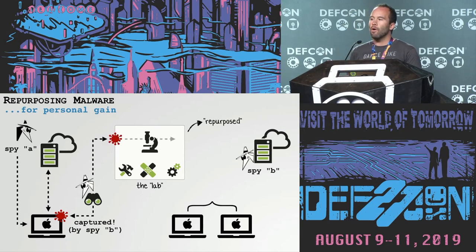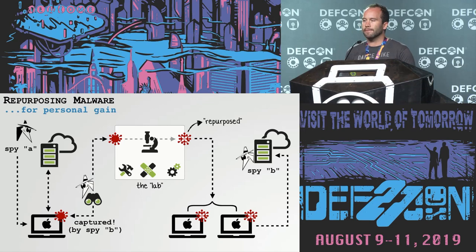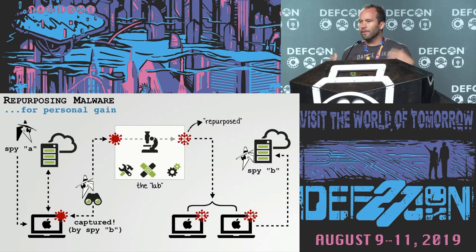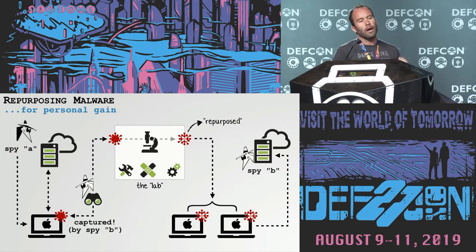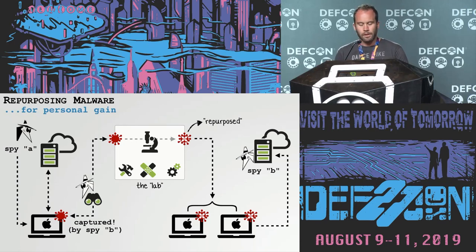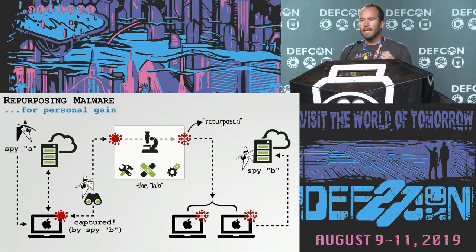Here we have a diagrammatic overview that conceptually explains the repurposing process. Imagine that SPY A has developed some sophisticated, fully featured malware and has deployed it to various targets, infecting various systems around the world. SPY B somehow captures this malware, perhaps either in transit or pulls it off an infected system. SPY B then takes this malware sample to her lab and repurposes it — reconfiguring a piece of existing malware so that she can use it for her own surreptitious purposes. Once repurposed, she can redeploy it against new targets, and instead of beaconing back to SPY A's infrastructure, it'll talk to her new infrastructure instead.